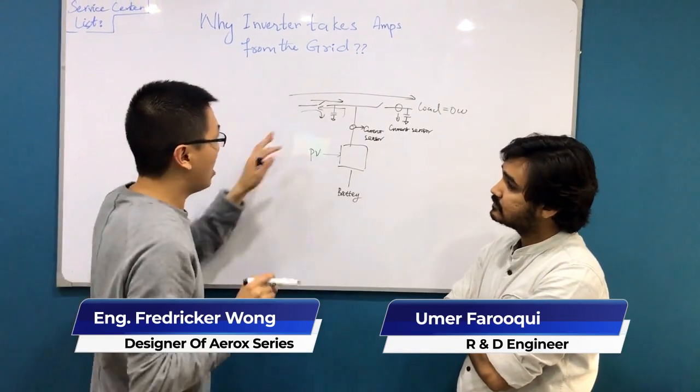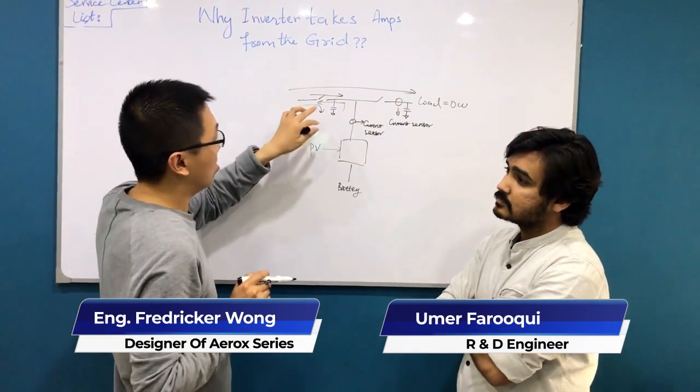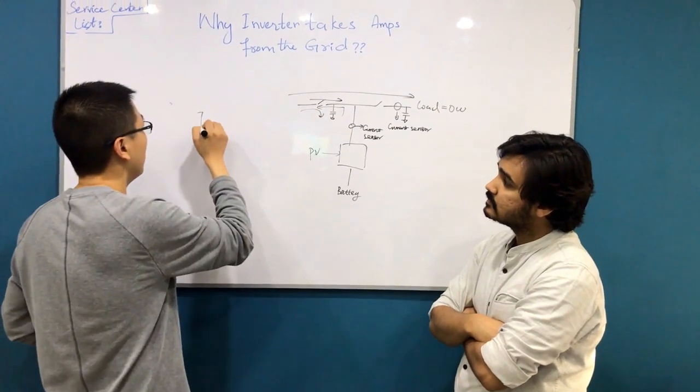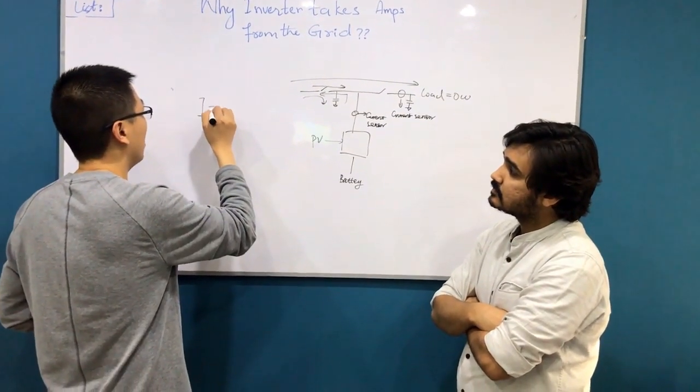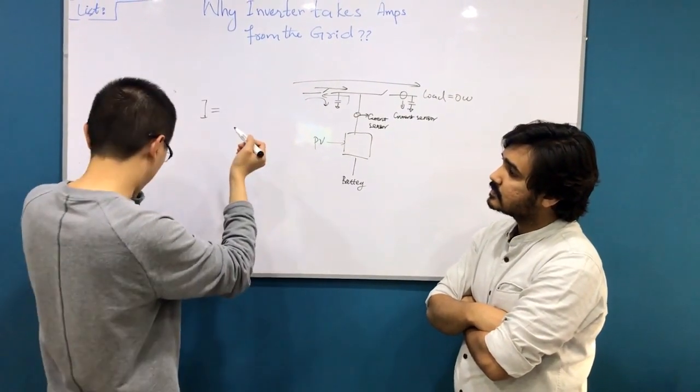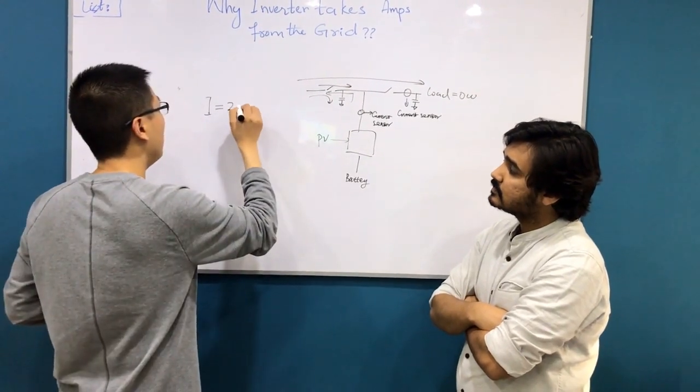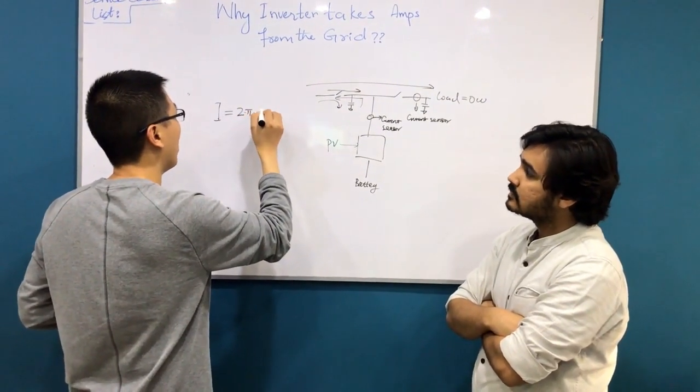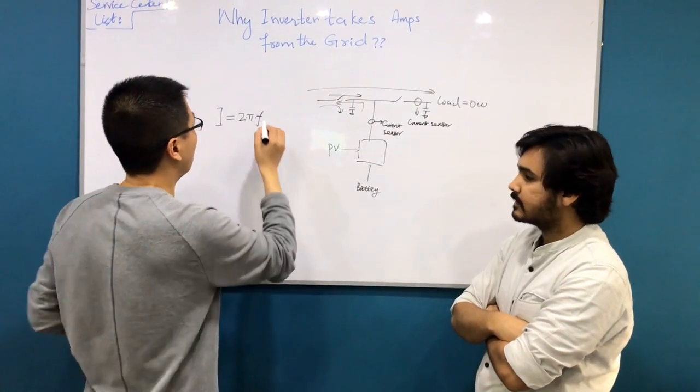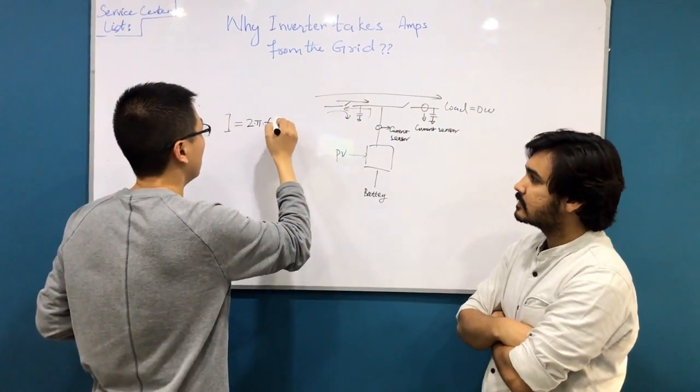And how we can calculate the current of the capacitance? We can use this formula. I equal to 2πf. And this is the frequency and the grid.